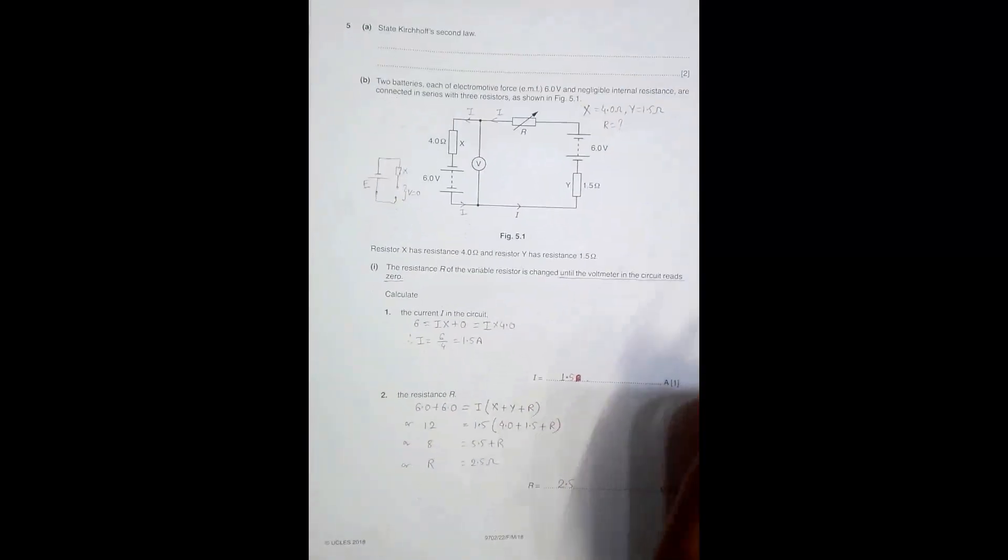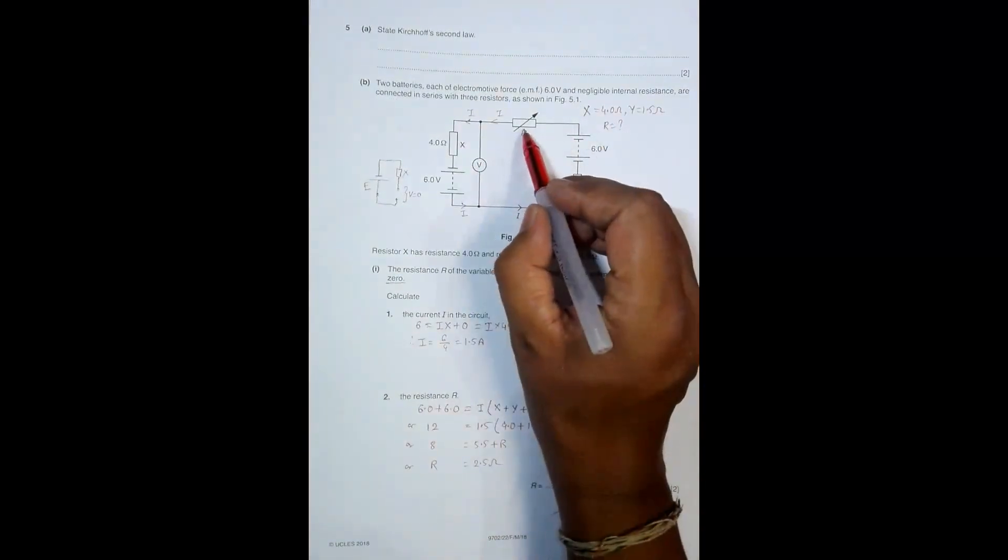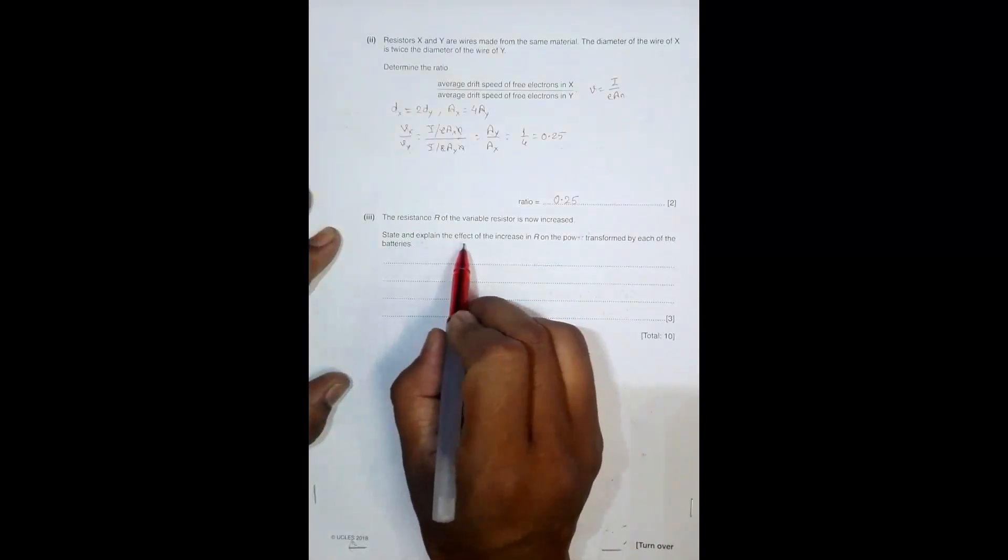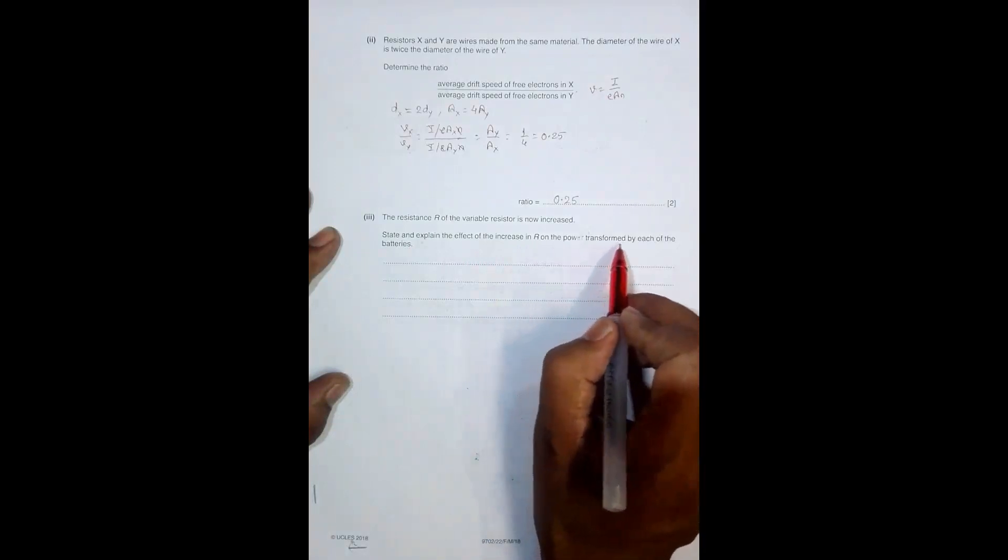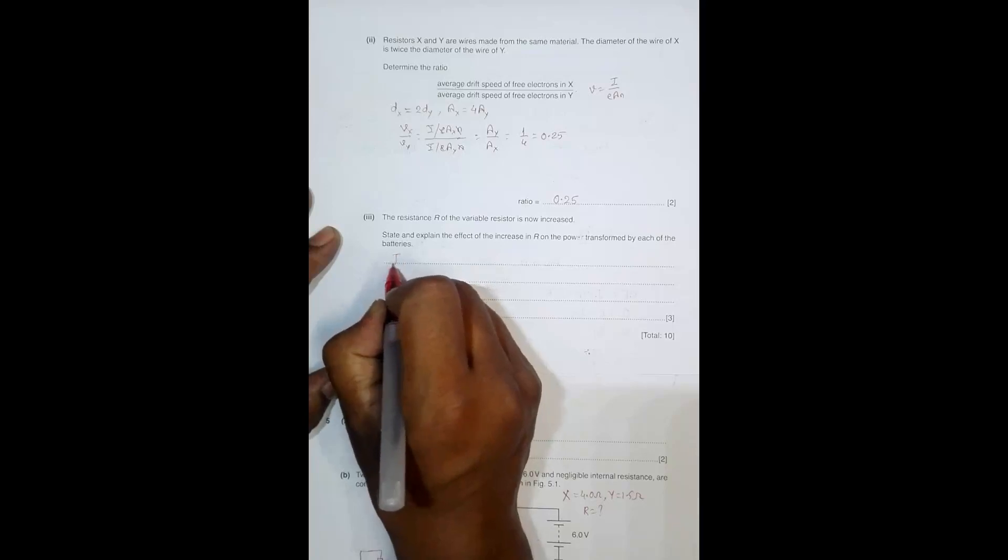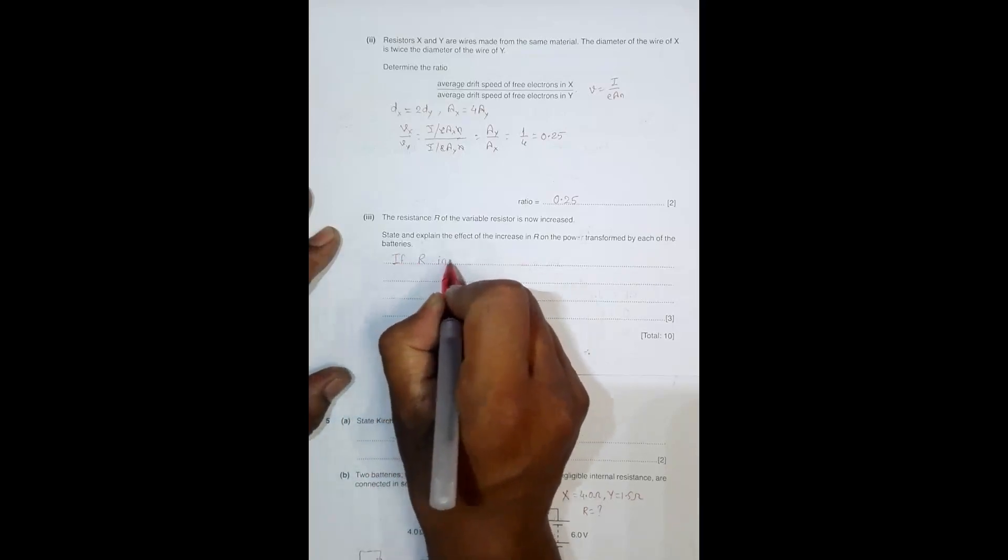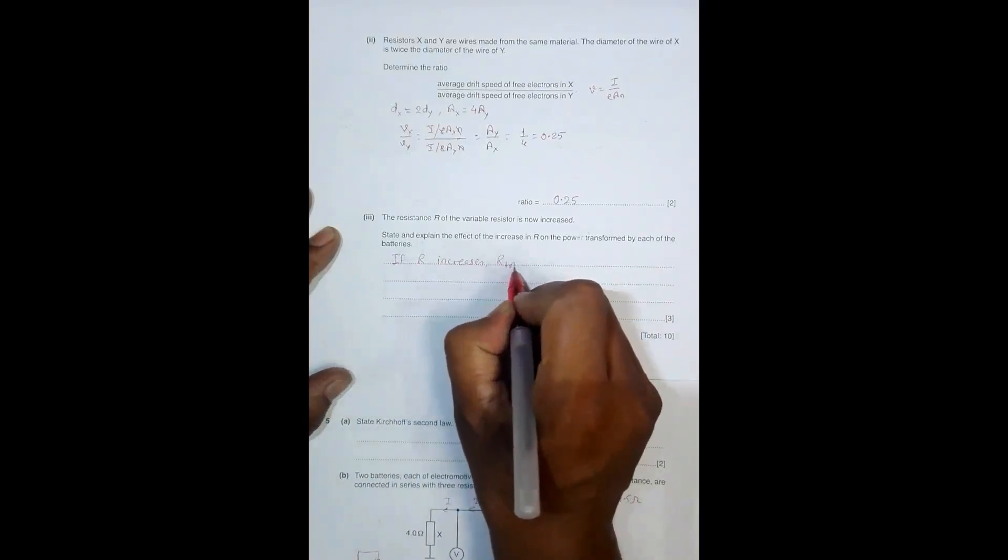Lastly, the resistance of the variable resistor previously was 2.5 ohm but now it is increased. We need to explain the effect of the increase in R on the power transformed by each battery. If R increases, the total resistance of the circuit increases, which means the overall current decreases.